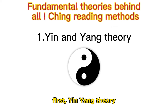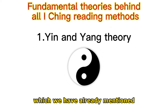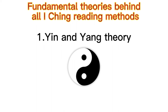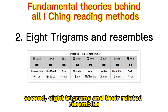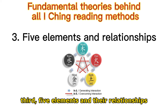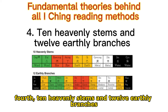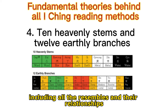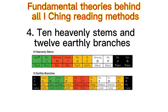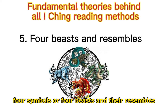So these fundamental theories are: first, Yin-Yang theory, which we have already mentioned; second, the eight diagrams and their related symbols; third, the five elements and their relationships; fourth, the ten heavenly stems and twelve earthly branches, including all their symbols and relationships; fifth, the four symbols — or four beasts — and their symbols.